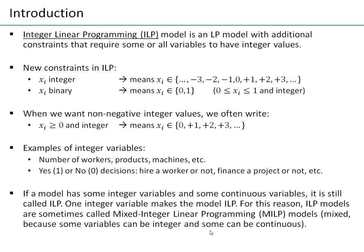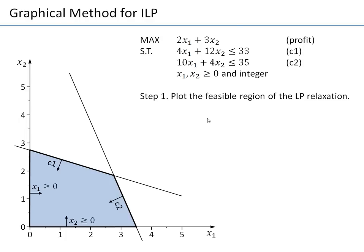To solve integer linear programming problems, let's first consider the graphical method. In the example model, we maximize a profit subject to two resource constraints C1 and C2, plus non-negativity and integer constraints. The first step is to plot the feasible region of the LP relaxation — meaning we ignore the integer constraint and plot the feasible region as usual. The feasible region ignoring the integer constraint is the blue region.